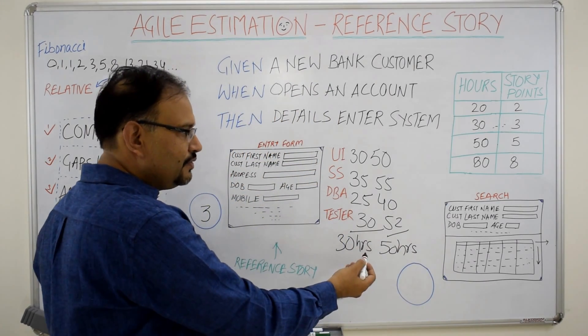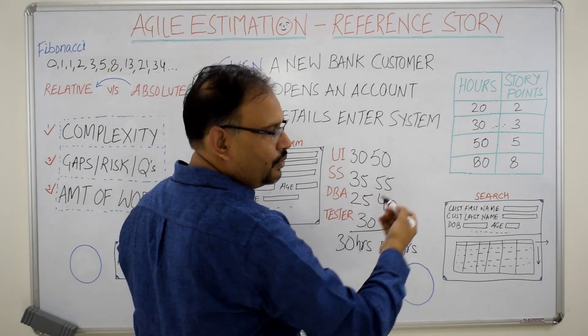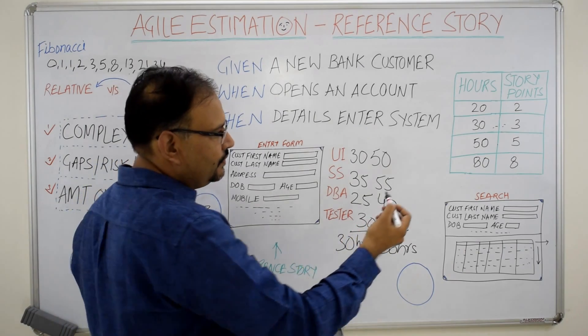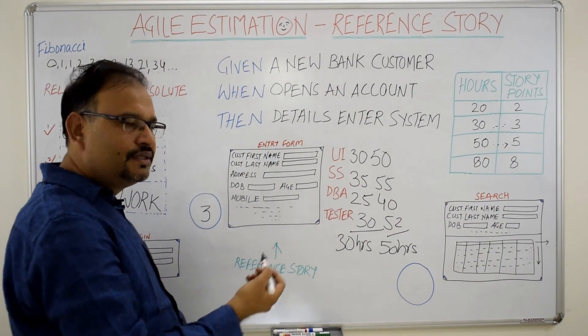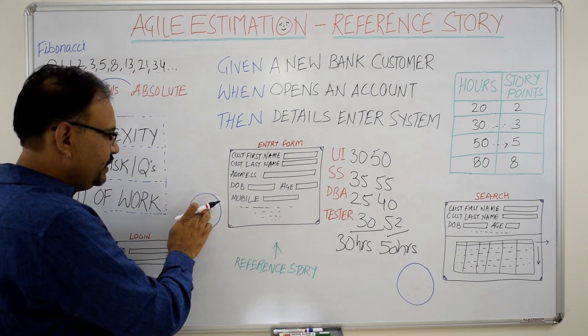I will take these 50 hours from here to this table and see what is the story point it is attracting, story point of 5. So 5 becomes the story point of the reference story in that case.